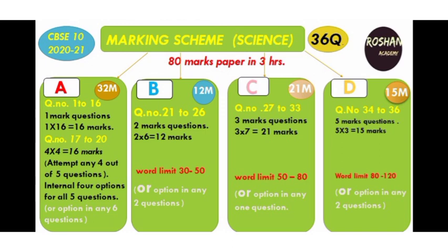Section A is carrying 32 marks in all and covers question number 1 to 20. From question 1 to 16, we are having one mark questions — that is questions each carrying one mark — which means a total of 16 marks.